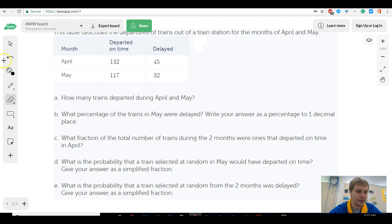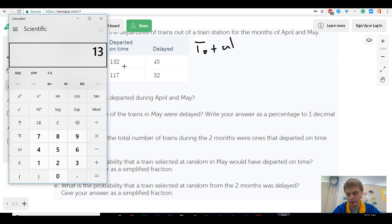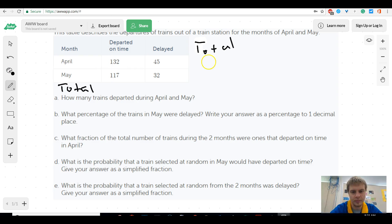And so, for this one, I'm going to add a category, and I'm going to say total right here. And then, I'm going to say total over here. So, this would be the total of things that happened in the month of April, and this would be the total of departures on time and delays. It's nice to have that information, because you probably will need it for the different problems that you do.